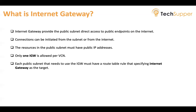You can originate traffic from OCI, or traffic can be originated from the internet back to OCI. The resource in the public subnet must have a public IP address in order to access the web from OCI. One important thing: only one Internet Gateway is allowed per VCN. Each public subnet that needs to use the Internet Gateway must have a route table rule specifying the Internet Gateway as the target.